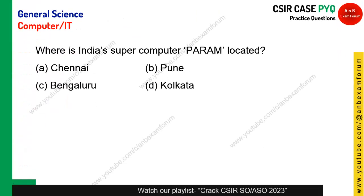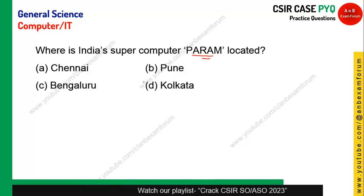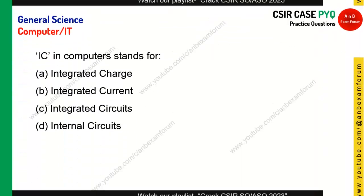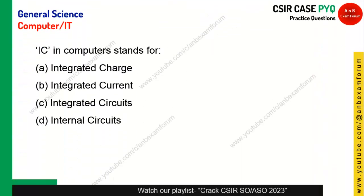Where is India's supercomputer PARAM located? It is located at C-DAC, Pune. More precisely, it is the PARAM 8000. Option B is the correct answer.